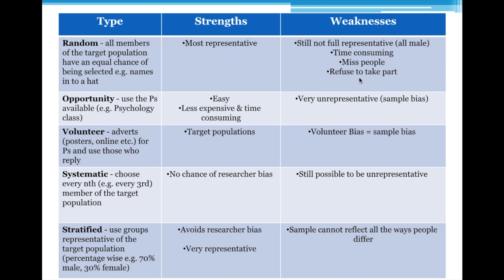Whether it's a college or a country, just because someone is on your list and comes up in your random sample, it doesn't mean they have to take part. They've still got a choice. Consent is important — check the ethics video if unsure. So that's the issue with random sampling, and it's why most studies end up using opportunity sampling instead.